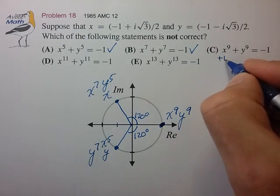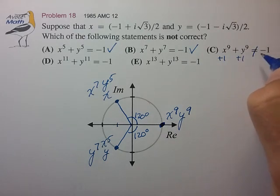Both of which land on positive one on the real axis. So these are all equal to +1. That does not equal to -1. So the correct answer is choice C.